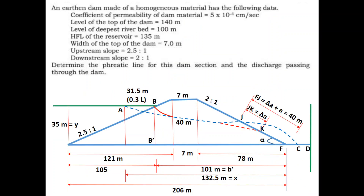An earth dam made of homogeneous material has the following data: coefficient of permeability of dam material is 5×10⁻⁴ cm/s. Level of the top of the dam is 140 m, level of the deepest river bed is 100 m, HFL of the reservoir is 135 m, top width of the dam is 7 m, upstream slope is 2.5:1, and downstream slope is 2:1. With this basic data we can determine the phreatic line.